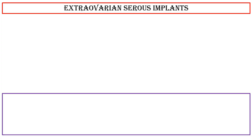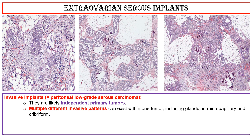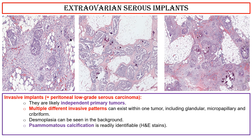Extra-ovarian serous implants — Invasive implants — Peritoneal low-grade serous carcinoma: They are likely independent primary tumors. Multiple different invasive patterns can exist within one tumor, including glandular, micropapillary, and cribriform. Desmoplasia can be seen in the background. Psammomatous calcification is readily identifiable. They are associated with poor prognosis and poor response to chemotherapy.